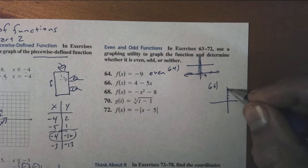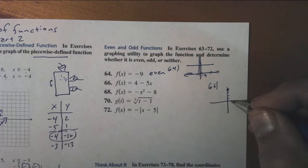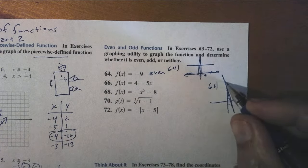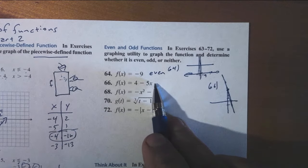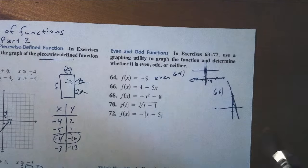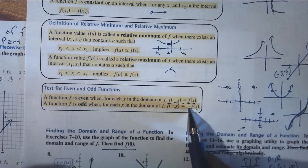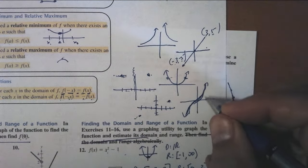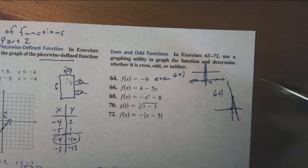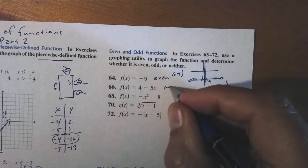For problem 66, we don't need a calculator. The graph goes through 4 with a slope of negative 5. Going left 1, the height is way up; going right 1, the height is way down — the height to the left is not the same as the height to the right, so it's not even. Is it symmetric about the origin? No — the height to the right of 1 is 0, but the height to the left of 1 is around 9 or 10. So this is neither.